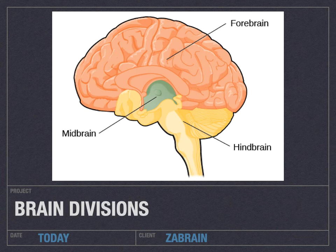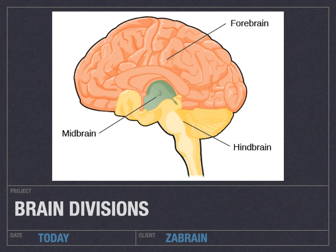We've got what's called the hindbrain, which is probably what you've heard referred to as the brainstem — that area of the brain just at the top of where your spinal cord enters your brain. We've got the midbrain, which is kind of this portion inside, sometimes called the lower brain, where a lot of automatic functions take place. And then you've got the forebrain, what people often call the cerebral cortex, where a lot of the higher-level functions happen. We'll look at the hindbrain today, then the midbrain, then the cerebral cortex.